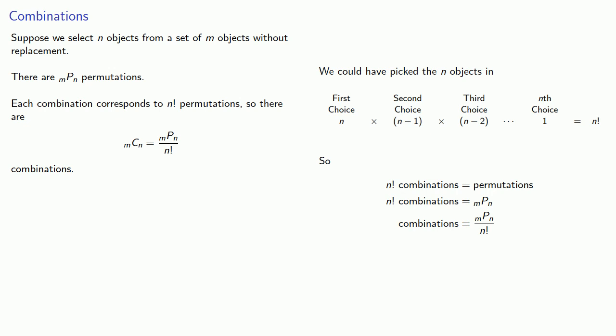Now, strictly speaking, we should call this m combine n because we're looking at combinations. But we frequently read this as m choose n.